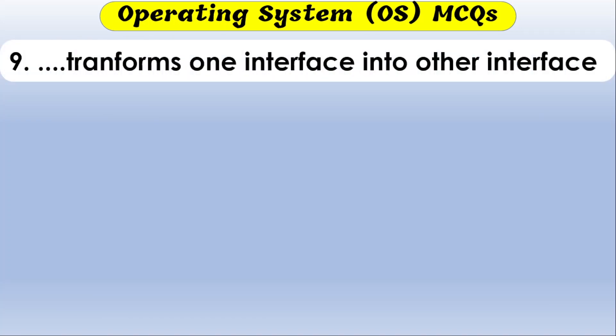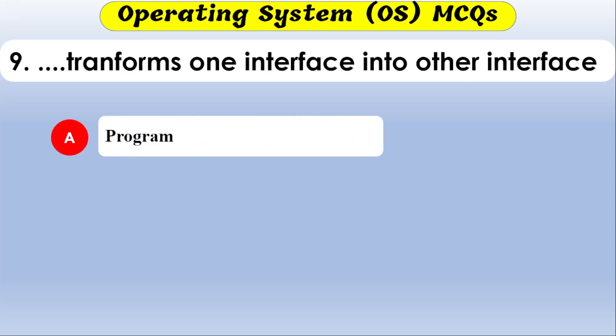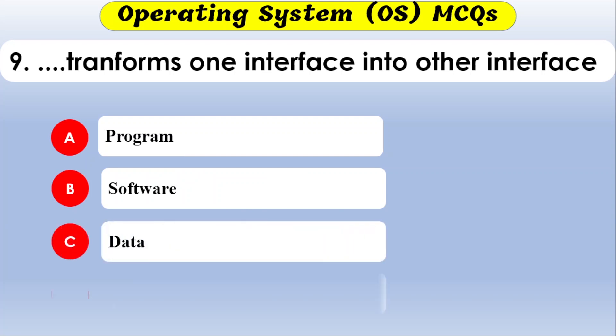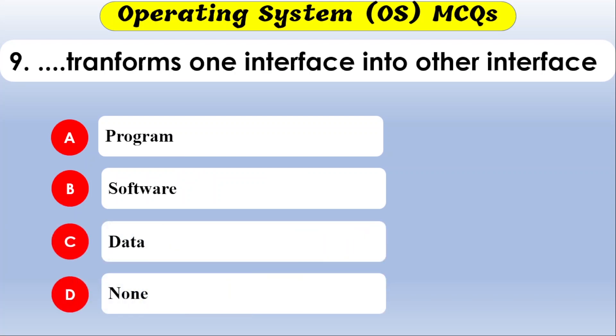The next question: what transforms one interface into another interface? The options are hardware, software, data, and none of the above. The correct option is software — software transforms one interface into another interface.